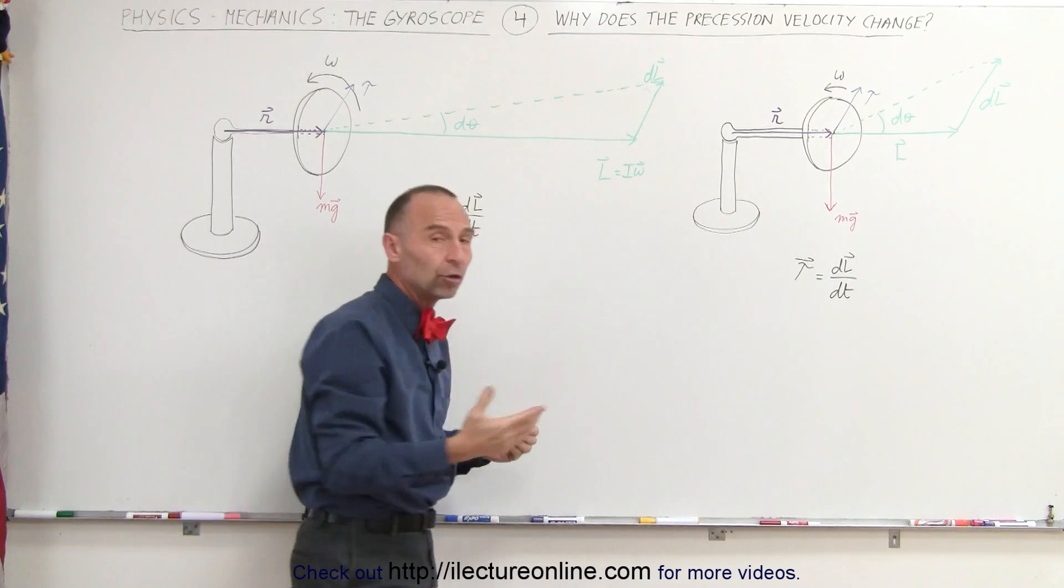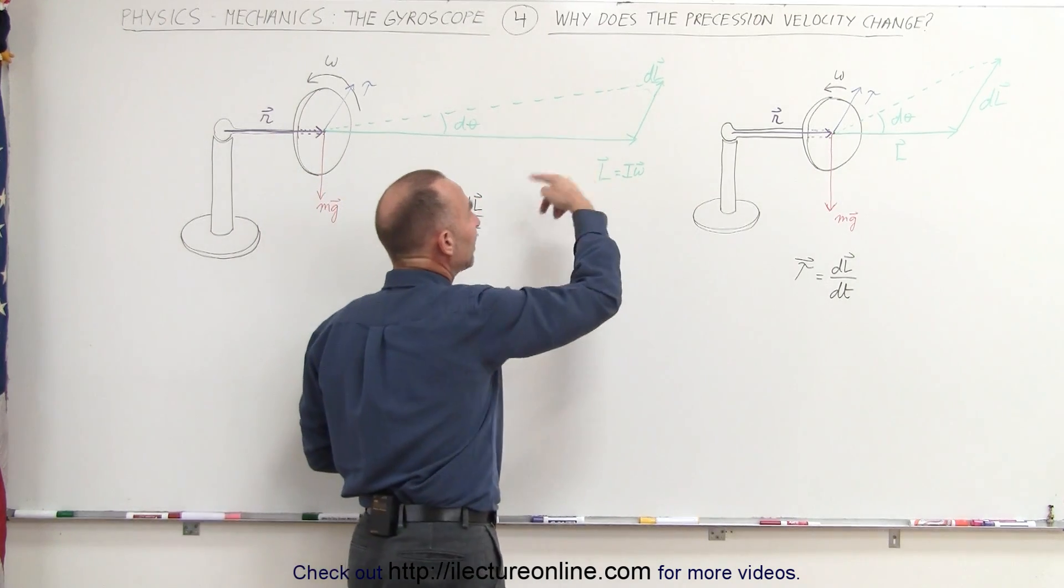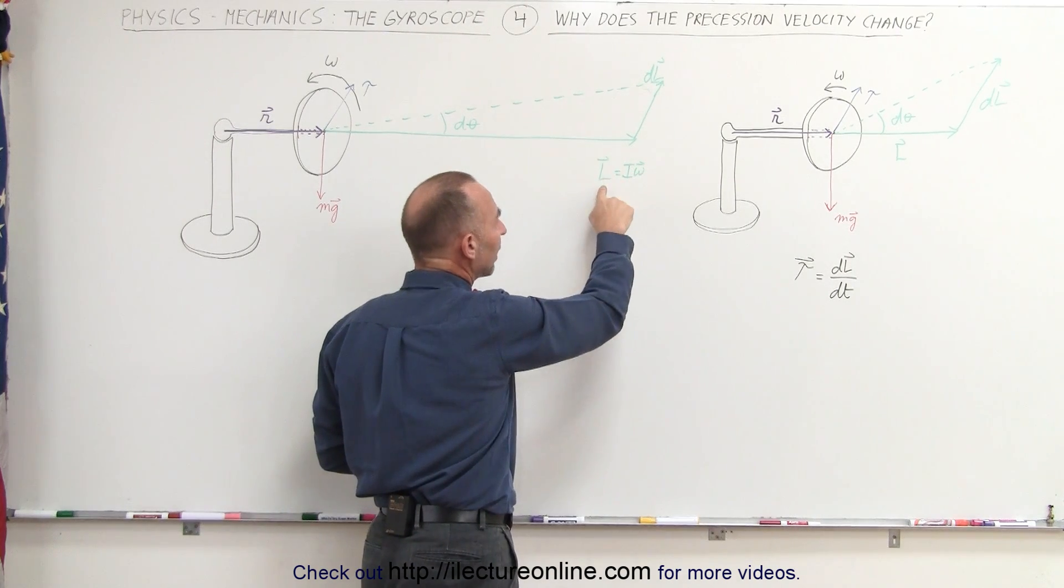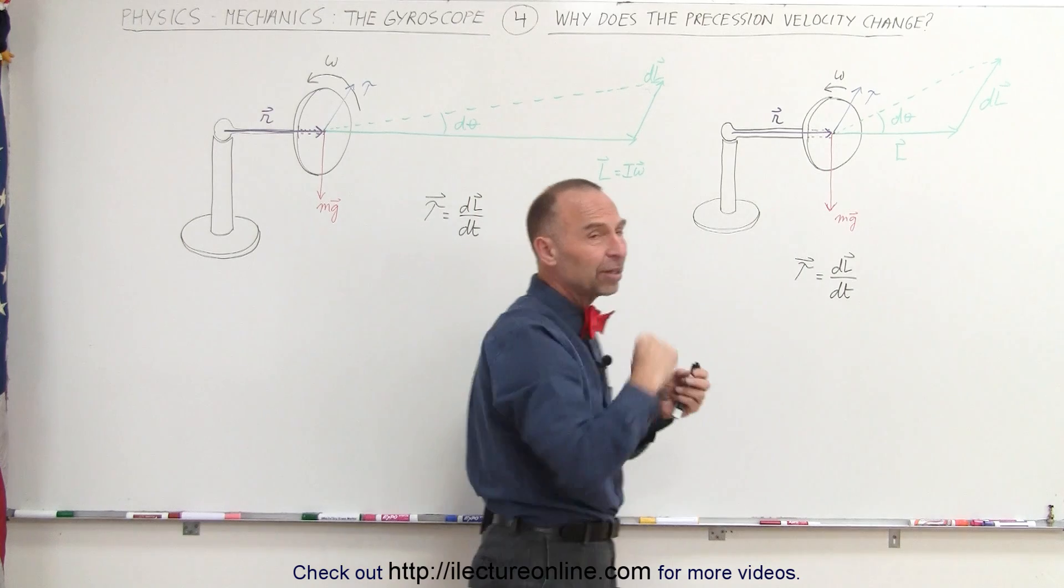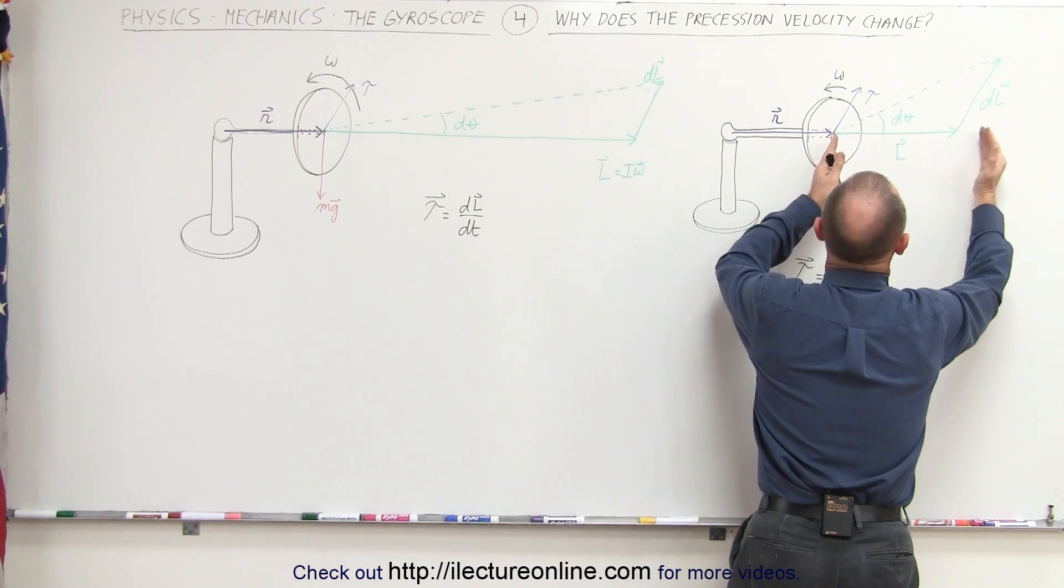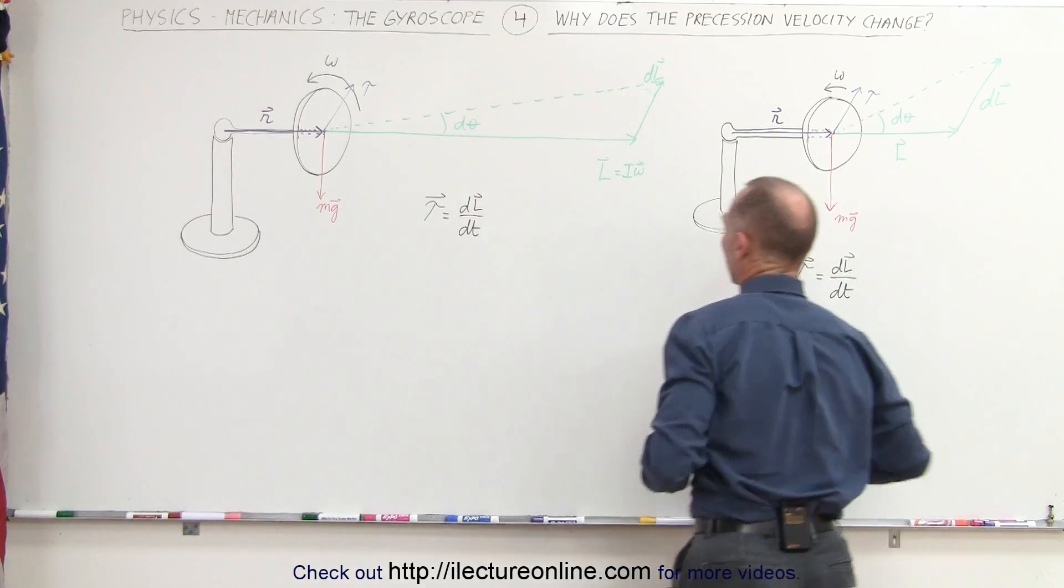I is the moment of inertia of the gyroscope, and omega is the angular velocity of the disc of the gyroscope. As omega gets smaller, L gets smaller, so as the spinning of the disc slows down, you can see that the angular momentum of the gyroscope decreases like this.